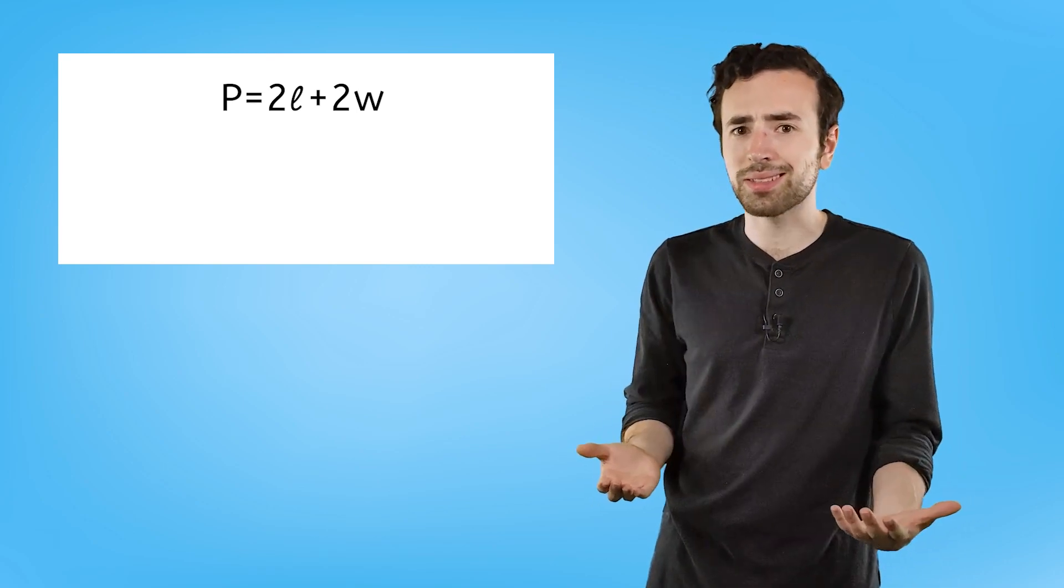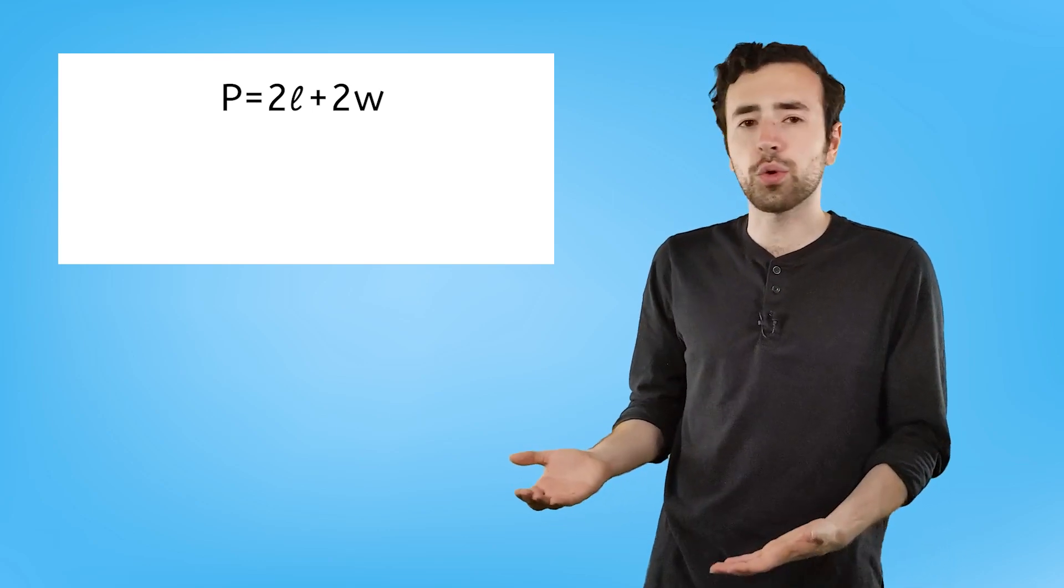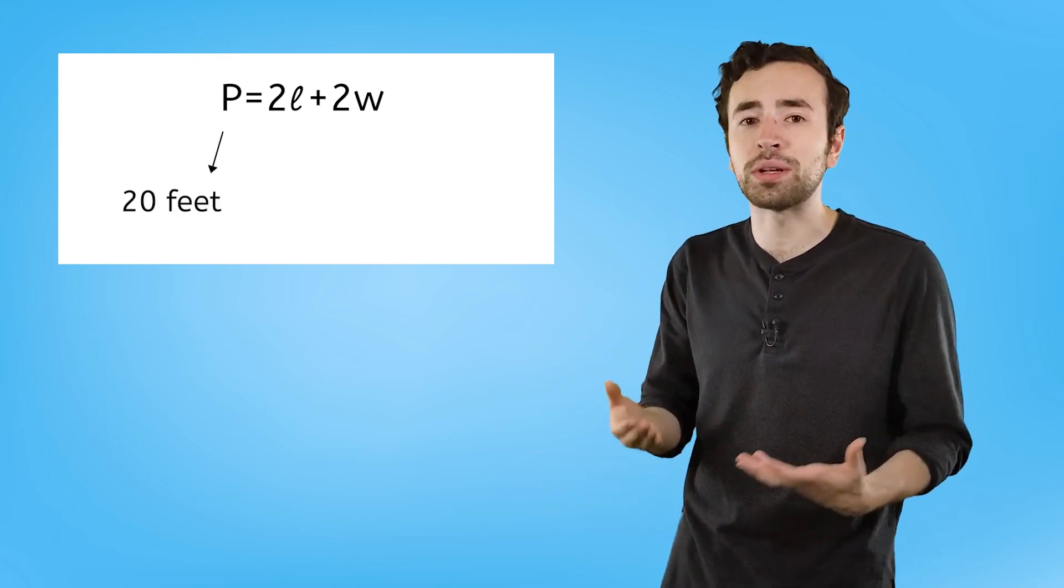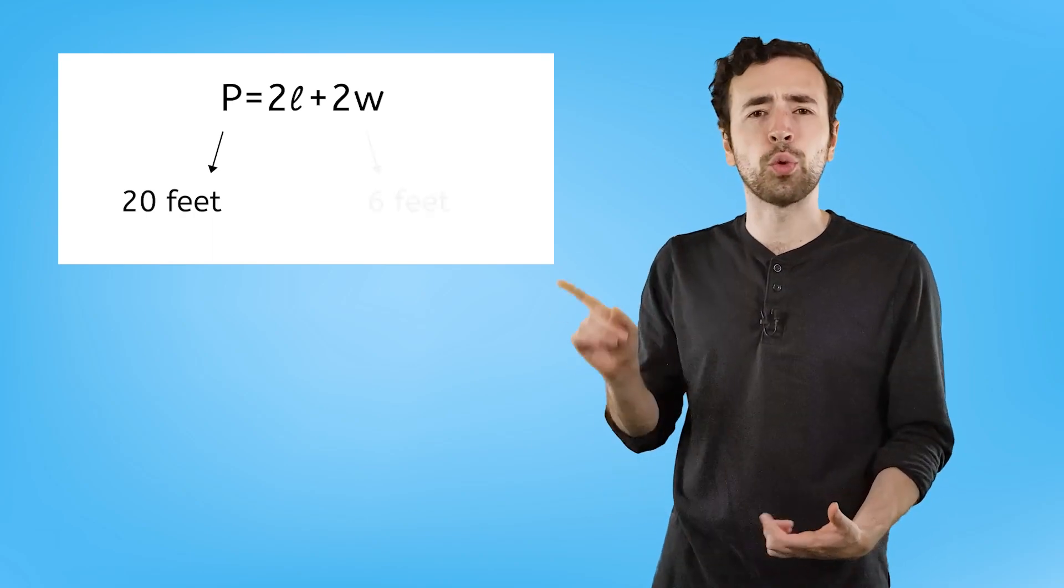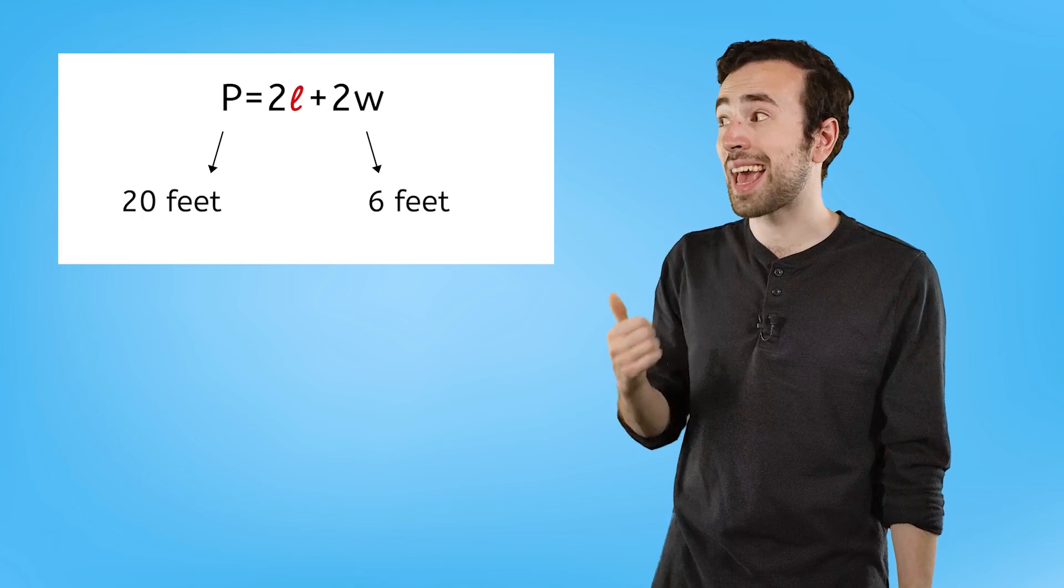But sometimes that's not the variable we're trying to find. With Jordan, we already know that the perimeter is going to be 20 feet. And we know that the width is 6 feet. So what we need to find is L, not P.